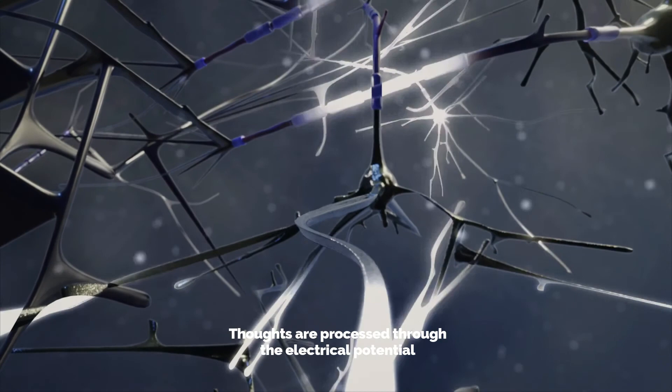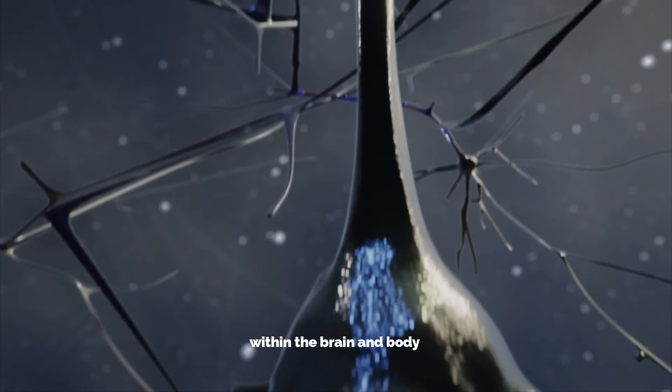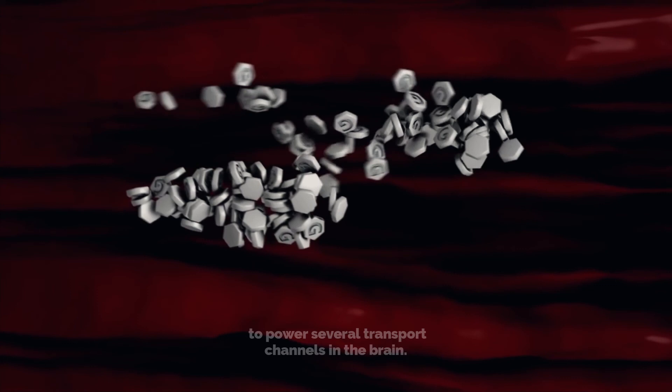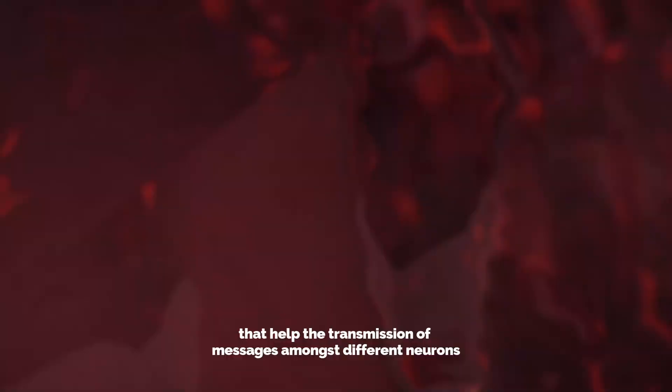Thoughts are processed through the electrical potential that is generated from several chemical reactions within the brain and body, which are then transmitted through neurons and then to the synapses between neurons. We consume glucose which is then utilized for energy production to power several transport channels in the brain. This energy is then turned into electrical signals that help the transmission of messages amongst different neurons, leading to the creation of thoughts.